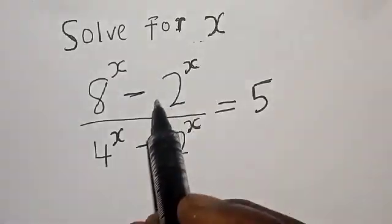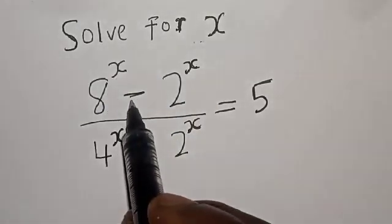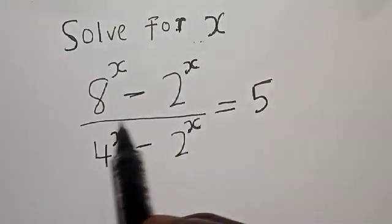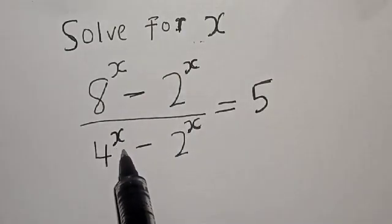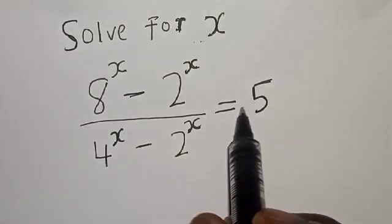Solve for x. 8 raised to power x minus 2 raised to power x, divided by 4 raised to power x minus 2 raised to power x, is equal to 5.